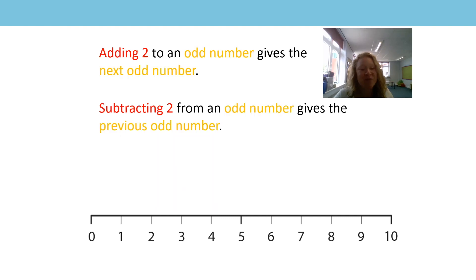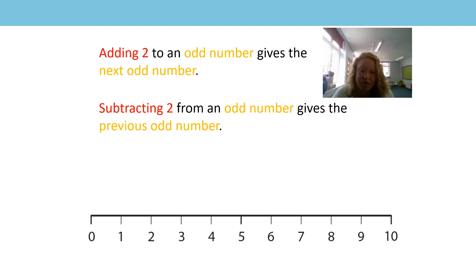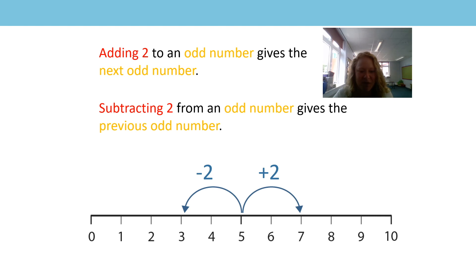And it works exactly the same with odd numbers: if we add two to an odd number we get the next odd number; if we subtract two from an odd number we get the previous odd number — just like before. Well done everyone!